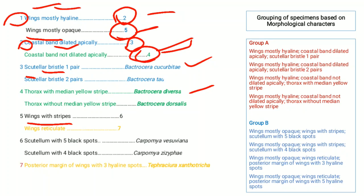A specimen with wings opaque, wings reticulate, and posterior margin of wings with three hyaline spots is identified as Tephrogura xanthotricha. If the posterior margin of wings has five hyaline spots, it is identified as Pithulina acroleosa. This is how you can prepare and use a taxonomic key for identification purposes.